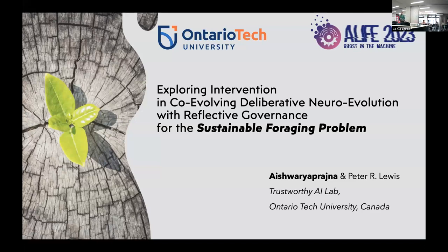Hi everyone, I'm Aishwaryaprajna, but you can call me Aish. I'm going to talk about sustainability today. It's one of these problems known as social wicked problems, because we don't know the exact solution yet — either we know really complex solutions at great cost, or we don't know the solutions. I want artificial agents to be able to understand if they are making sustainable choices.